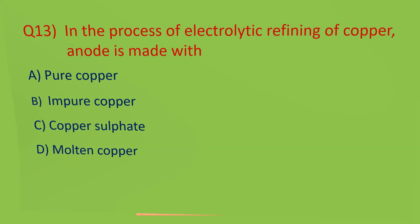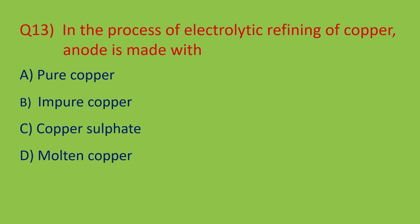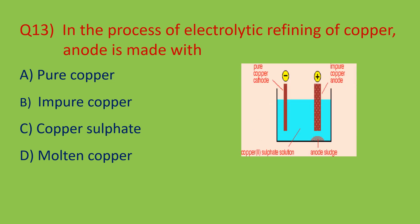Question number thirteen: in the process of electrolytic refining of copper, what is the anode made with? Notice the diagram — this shows purification of copper by electrolytic refining. The anode is made of impure copper and the cathode is made of pure copper. Since the question asks about the anode, the right answer is option B — impure copper.